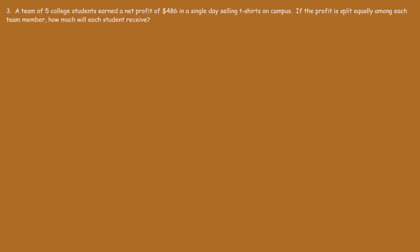Now let's move on to this problem. A team of 5 college students earned a net profit of $486 in a single day selling t-shirts on campus. If the profit is split equally among each team member, how much will each student receive? In this problem, we need to perform division — we simply need to divide $486 by 5.